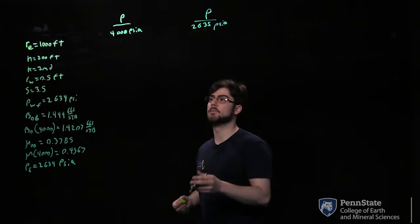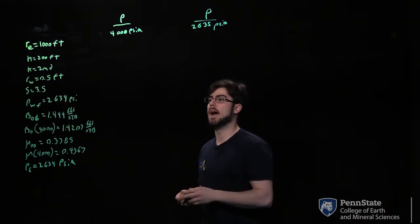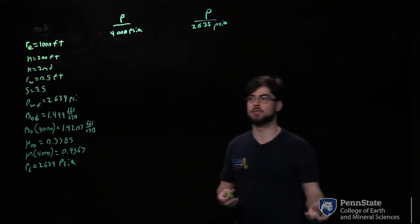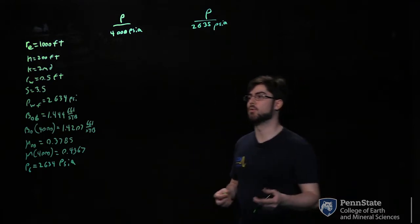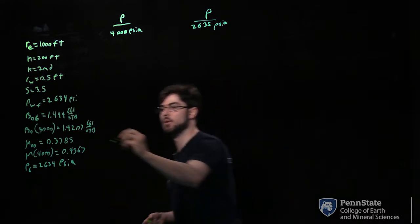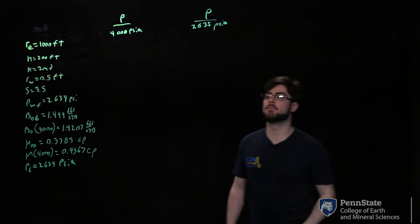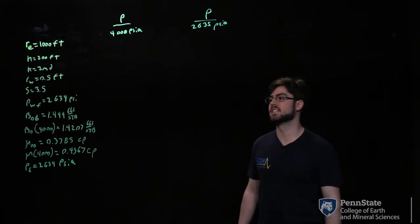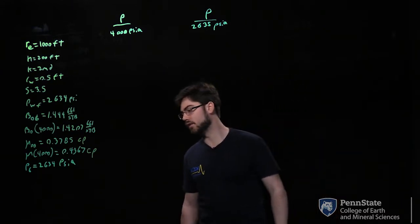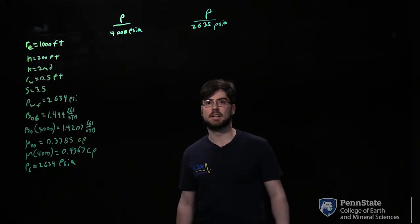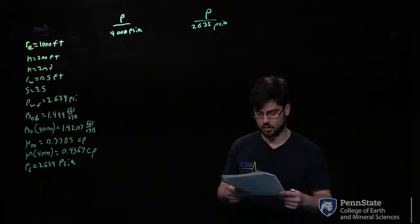Our formation volume factor of oil at bubble point is 1.444, and at 4,000 psi it's 1.4207. Our viscosity at bubble point is 0.3785 centipoise, and at 4,000 psi it's 0.4367 centipoise. We'll start with solving for steady state first, and we're also going to work with pseudo steady state for this question.